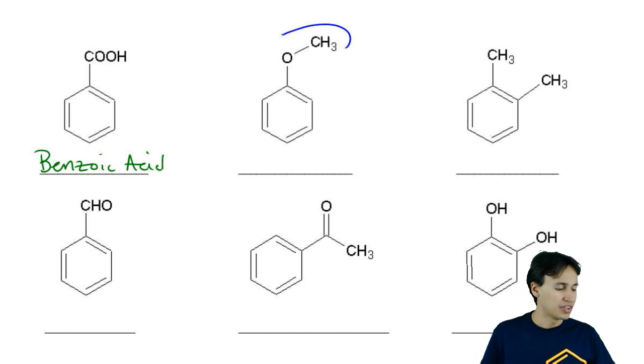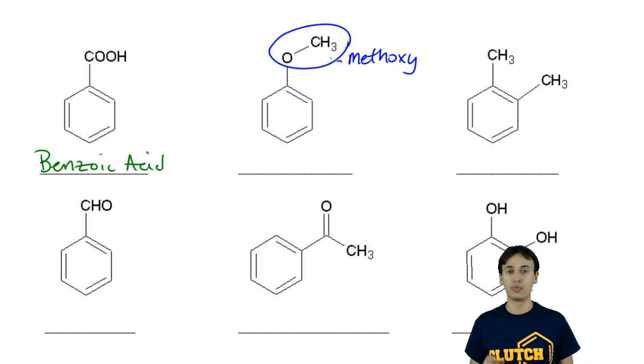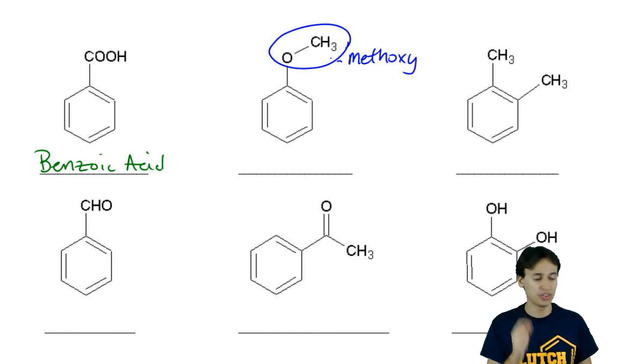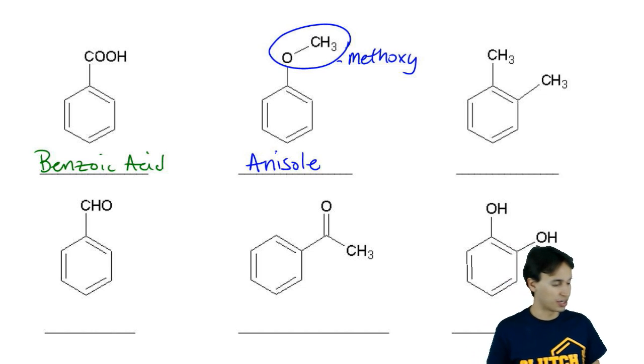This is actually called a methoxy group. Back when we talked about ethers, we learned that ethers can be named with an alkoxy substituent. This would be like an ether, R-O-R, methoxy. If you see methoxy, that's called an anisole. Like I said, some of these are getting weird.